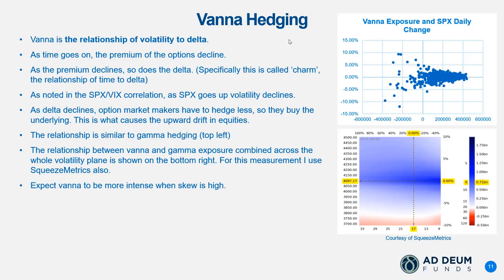But how do we explain the slow, incremental increase in the market over time? A lot of it comes from vana hedging. Vana is the relationship of volatility to delta — on a 1% change in volatility, what does the delta of an option do? Delta is the number of shares of the underlying needed to hedge a position, so any volatility impact on delta matters for assessing dealer behavior.